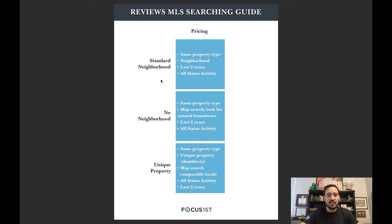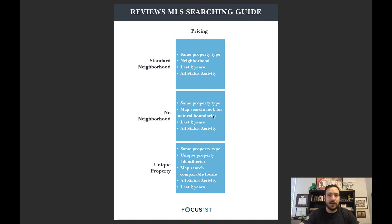In most cases you're going to use the top box, which is the standard neighborhood. If you're not part of a standard neighborhood, you'll drop down to the 'no neighborhood' option — instead of a neighborhood name, you'll use a map search and look for natural boundaries. These can be rivers, major highways, major intersections, and such.